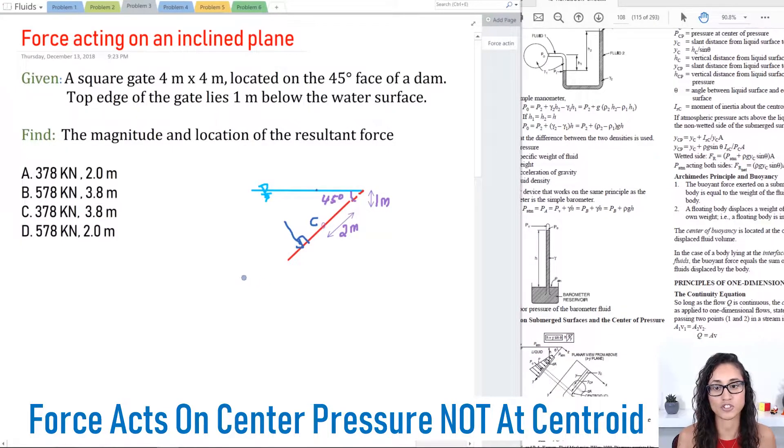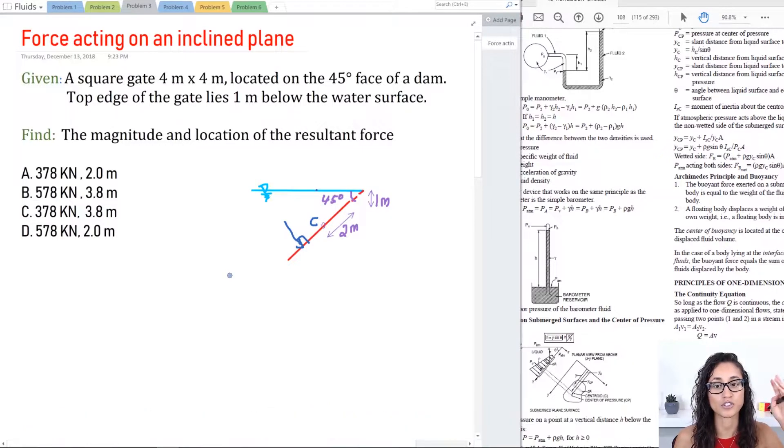Note that the resultant force is not going to be at the centroid, it's going to be somewhere else and it's always perpendicular to the surface. I mentioned this more in depth in one of my previous videos, I will leave you the link above so you definitely check it out. This is your resultant force and this distance, that's the location where the force is acting, so this is going to be YCP or you can call it YR.